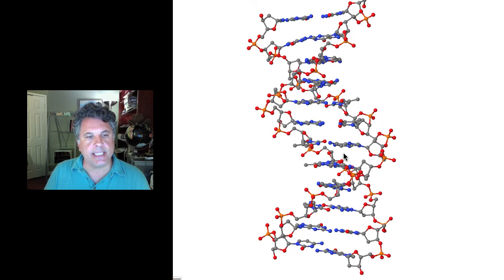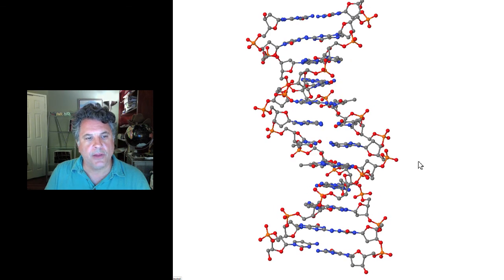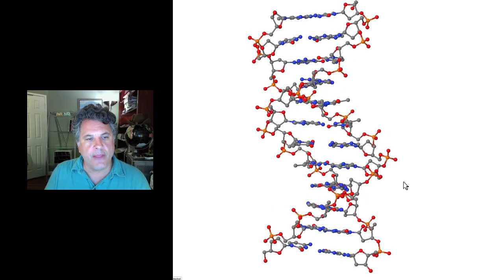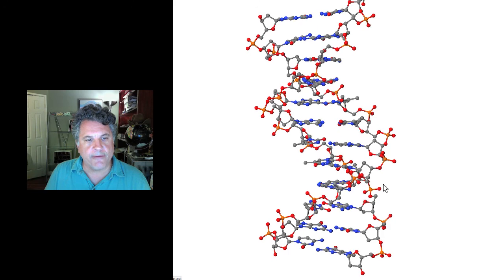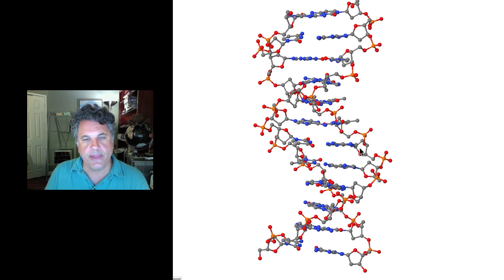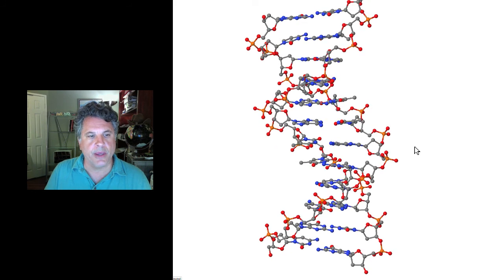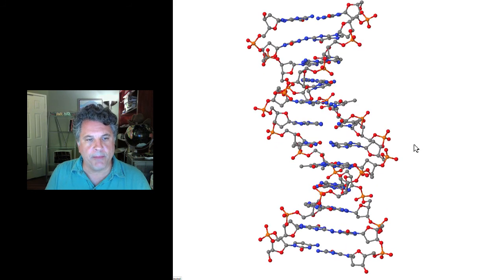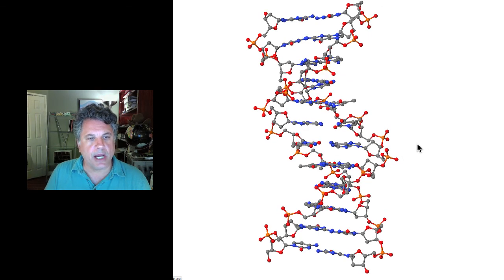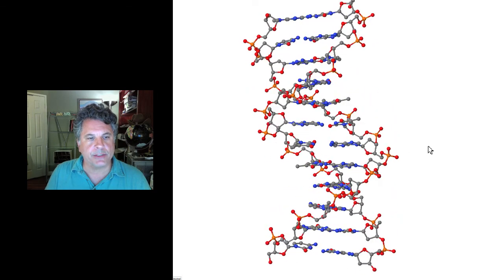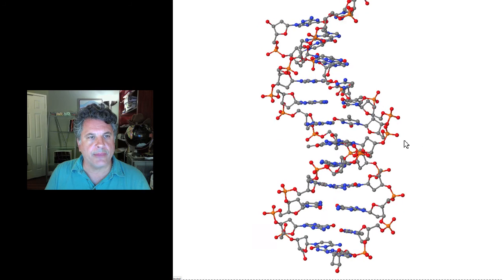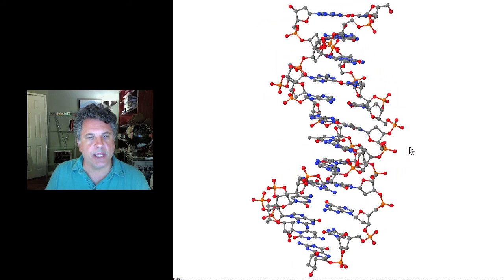Yet this monotonous — though beautiful — molecule somehow contains the information that allows it to replicate with great fidelity and to encode the information of genes. It is able to store information in a chemical sense that can be decoded to produce an organism, to build an organism with efficiency and repeatability. How that happens is what we will be delving into over the next stretch of this class, as we look at the ways that DNA information is coded and decoded.